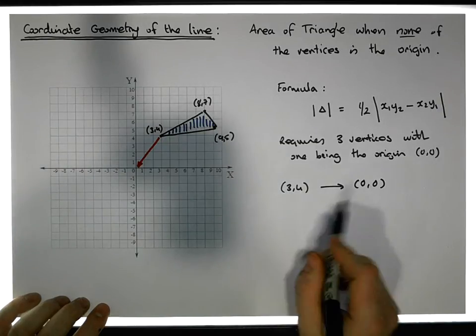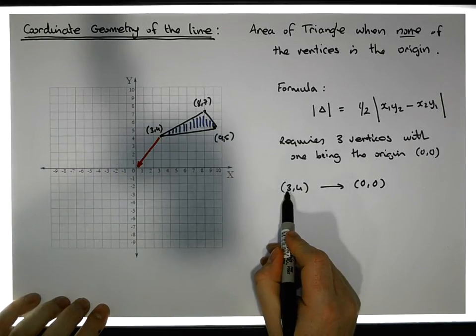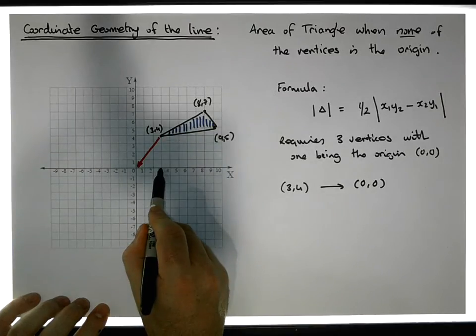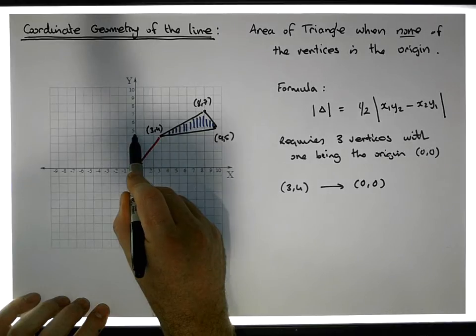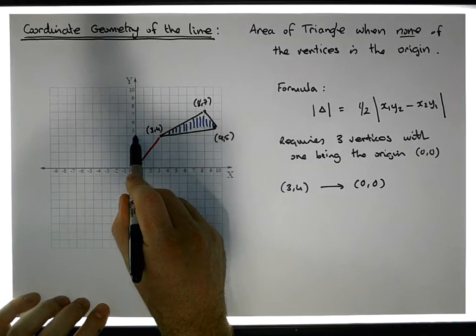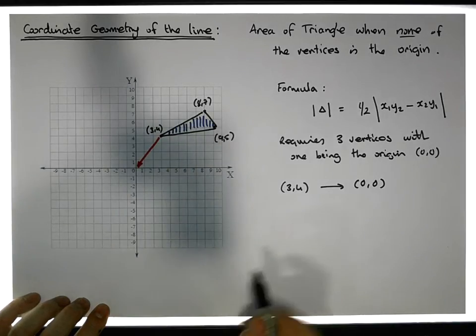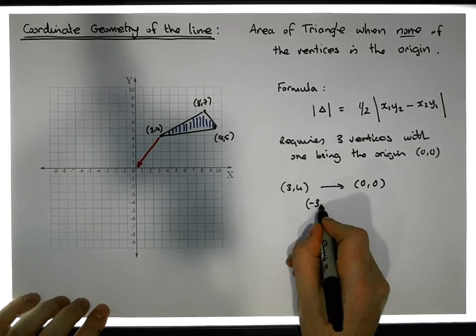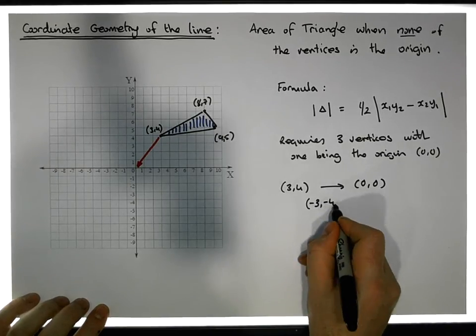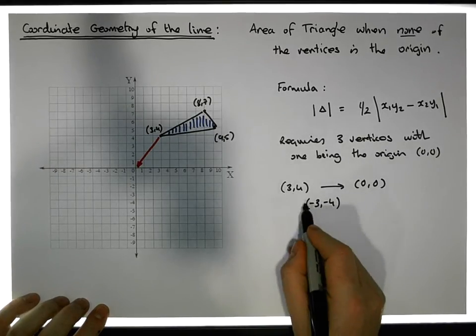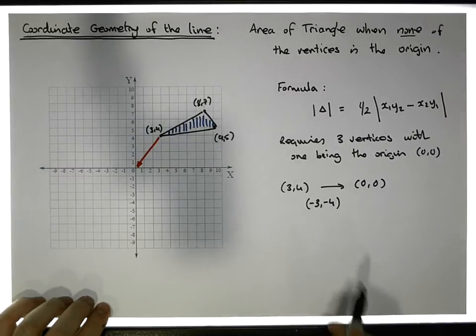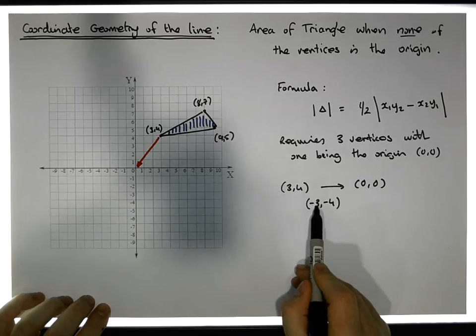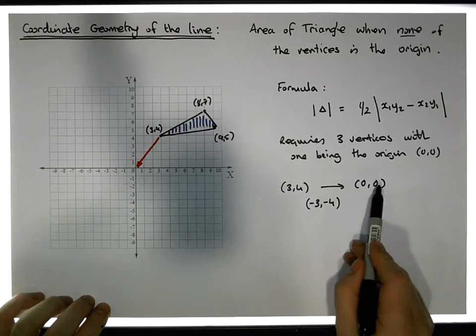How do I get from (3,4) to (0,0)? Well, if I take three away from the x coordinate—if I reduce it by three—that brings me here. And if I reduce the y coordinate by four, that brings me down to the origin. So I could add minus three onto the x component and add minus four onto the y component. The effect of that would be: three minus three gives me zero, four minus four gives me zero.